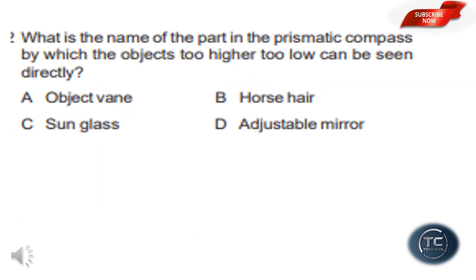What is the name of the part in the Prismatic Compass by which objects that are too high or too low can be seen directly? In this type of compass, objects too high and too low can be seen directly. The options are objective, horsehair, sunglass, and adjustable mirror. The answer is option D: adjustable mirror.